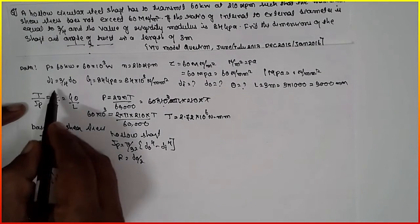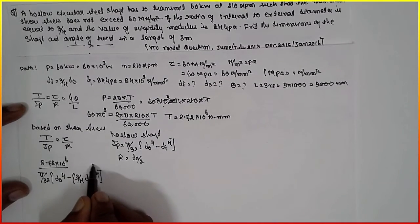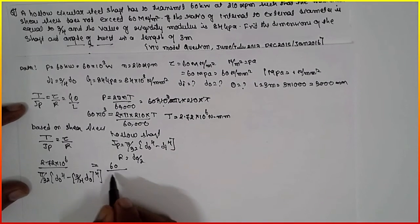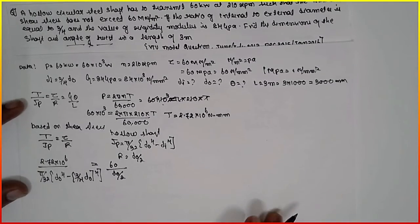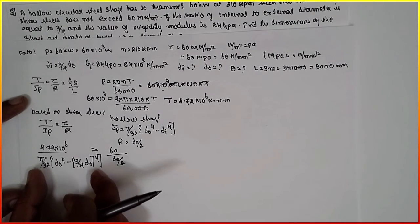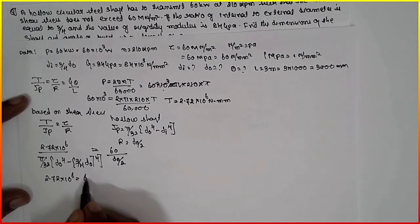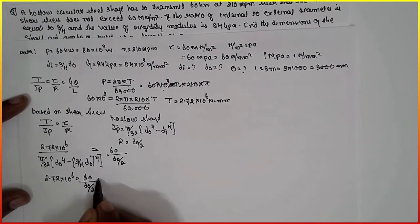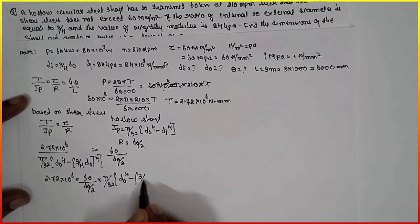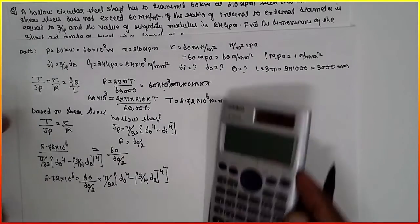Now substitute here: 2.72 times 10 raised to 6 divided by pi by 32 times D0 raised to 4 minus, there is a condition for Di, 3 by 4 D0 raised to 4 close the bracket, equals 60 divided by D0 by 2. One unknown is repeating more times, therefore we bring everything to one side: 2.72 times 10 raised to 6 equals 60 divided by D0 by 2 times pi by 32 times D0 raised to 4 minus 3 by 4 D0 raised to 4. Now with the help of calculator.